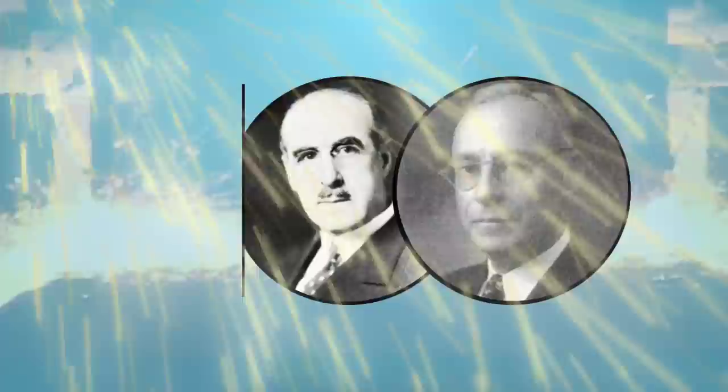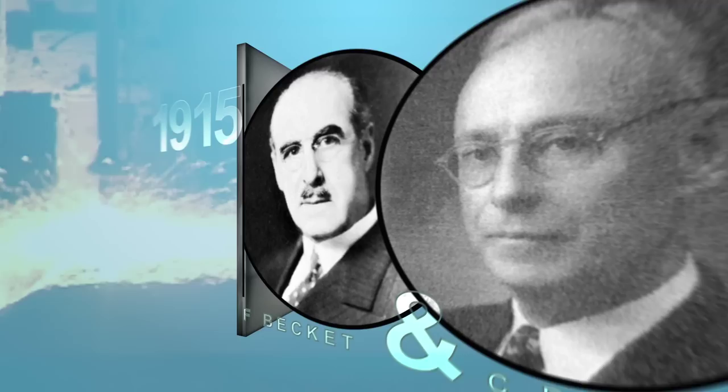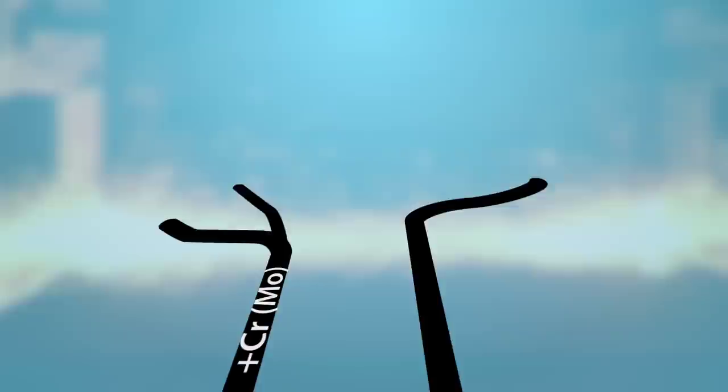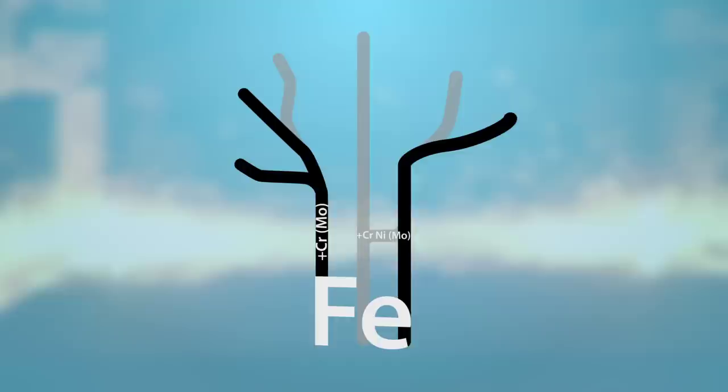At about the same time in America, Frederick M. Beckett and Christian Dantzeisen develop yet another type of stainless steel, ferritics, which accounts for 30% of the world's stainless steel production today. In the years leading up to 1920, within less than a decade, three main branches of the stainless steel family tree – austenitic, martensitic and ferritic – are all thriving and are still present today in a wide range of applications.